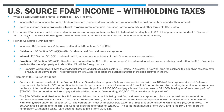US source FDAP income paid to non-residents — whether a non-resident individual or a foreign entity such as a foreign corp, foreign partnership, or foreign trust — is subject to withholding taxes at a base rate of 30% on the gross amount. The relevant code sections are §1441, which covers this broadly for individuals, and §1442, which covers payments to foreign corporations. The 30% rate can be reduced if the recipient qualifies for a reduced rate under a tax treaty — for example, a UK resident earning US source FDAP income might qualify for a lower rate under the applicable treaty article.